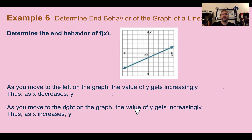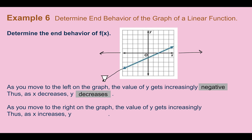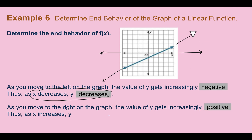Example 6: Determine the end behavior of the graph of a linear function. For all of these, there are two things to consider: what's happening as x decreases, and what's happening as x increases. As you go left — when x is decreasing — the function seems to be going down farther and farther. So y gets increasingly negative; as x decreases, y decreases. That's our end behavior. As we go to the right, our y seems to be going up, getting more positive. So as x increases, y increases. That combination is our end behavior.